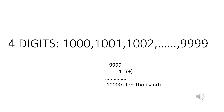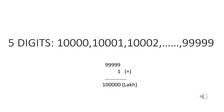When we add 1 to the greatest four-digit number 9999, we get 10,000 — 1 followed by 4 zeros. 10,000 is the smallest five-digit number. From 10,000 to 99,999, these numbers are called five-digit numbers. The smallest five-digit number is 10,000 and the greatest five-digit number is 99,999.